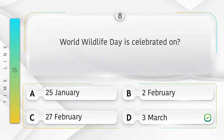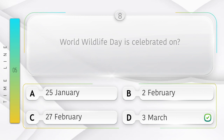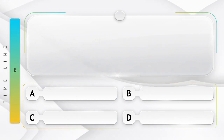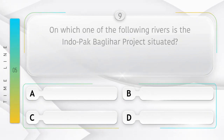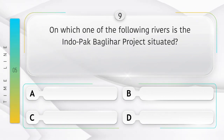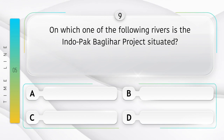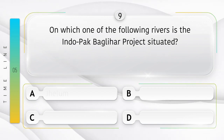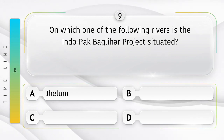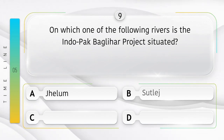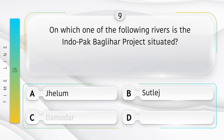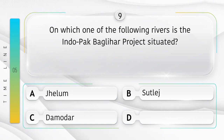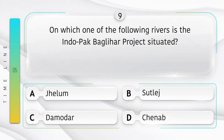On which one of the following rivers is the Baglihar project situated? Option A: Jhelum, B: Satlaj, C: Damodar, D: Chinab. Answer is option D, Chinab.